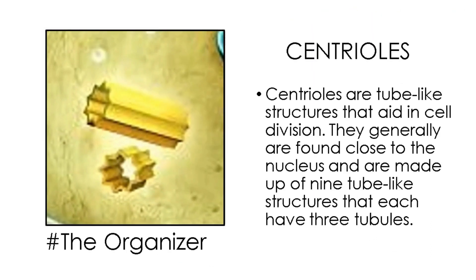Centrioles are tube-like structures that aid in cell division. They are generally found close to the nucleus and are made up of nine tube-like structures, each having three tubules. Centrioles are found inside the centrosome. They separate the chromosomes during animal cell division and are only found in animal cells.